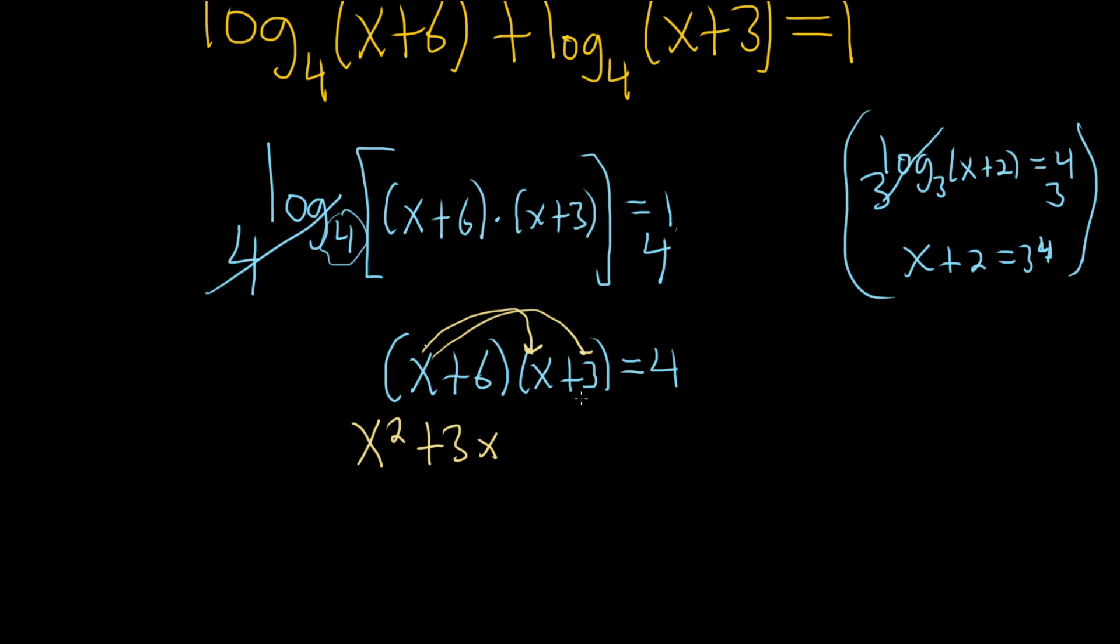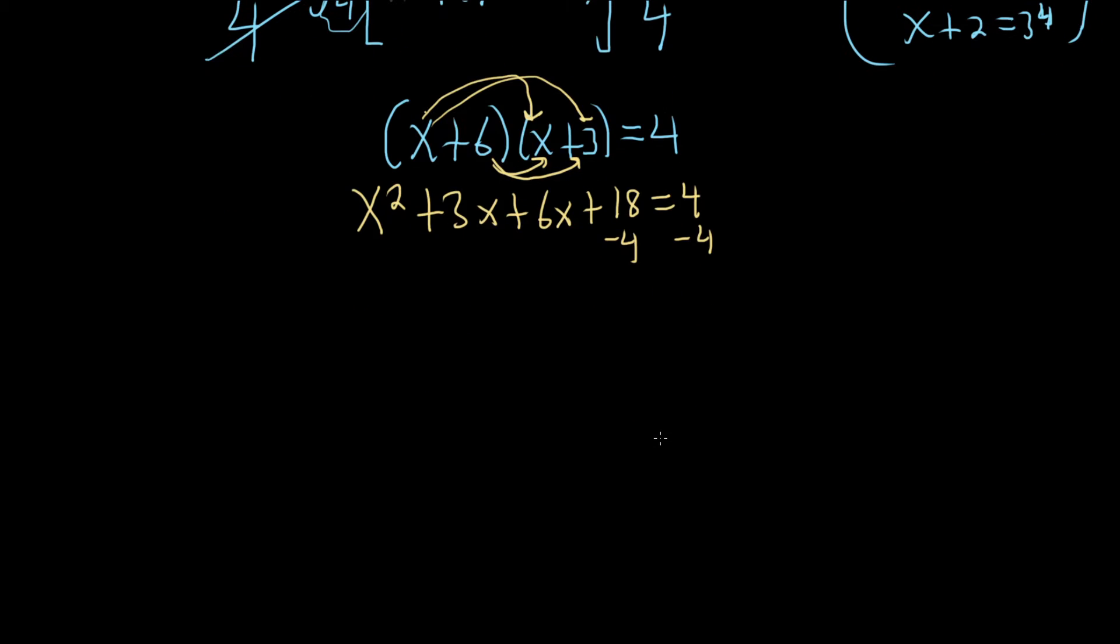Then you do the same thing with the 6. You just take the 6 and multiply it by both of these. So it'll be 6x. And then 6 times 3 is 18. And this is equal to 4. We can subtract the 4 and combine like terms. So we have x squared. 3x plus 6x is 9x. And then 18 minus 4 is 14. And that's equal to 0.